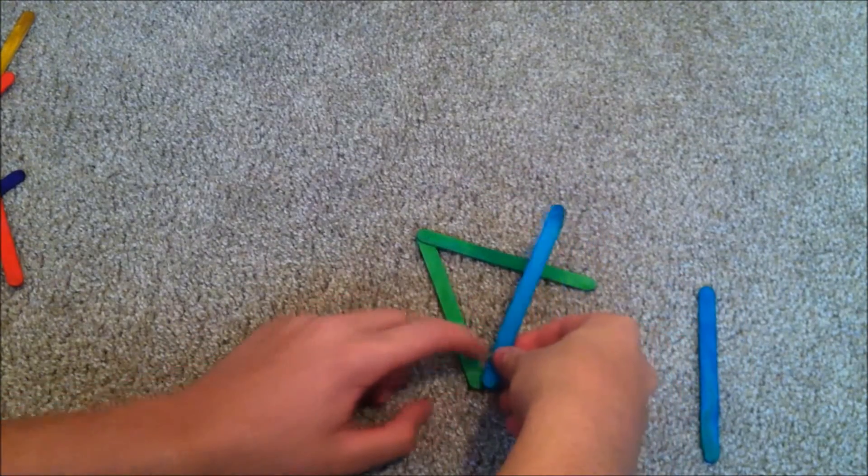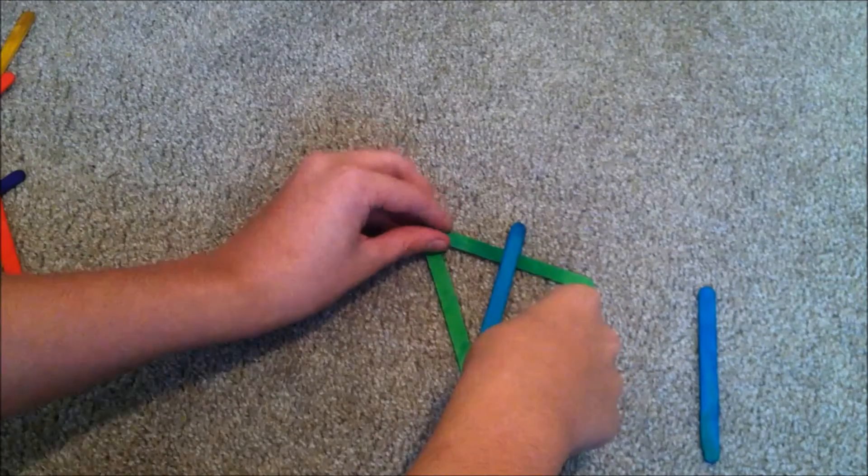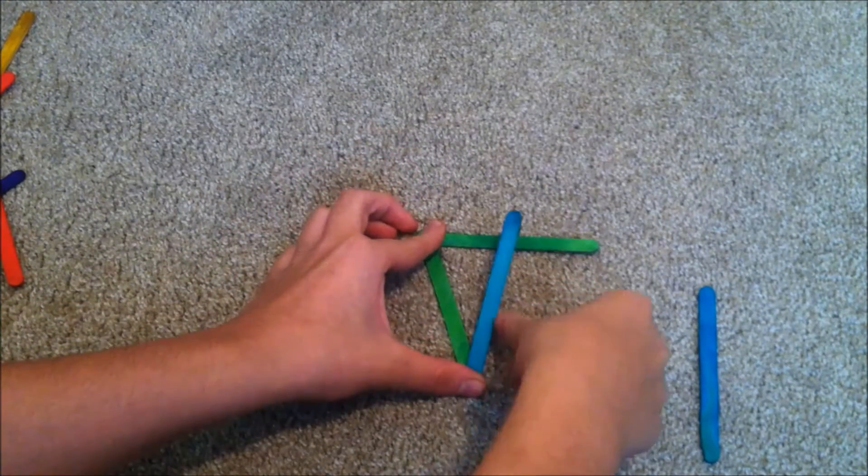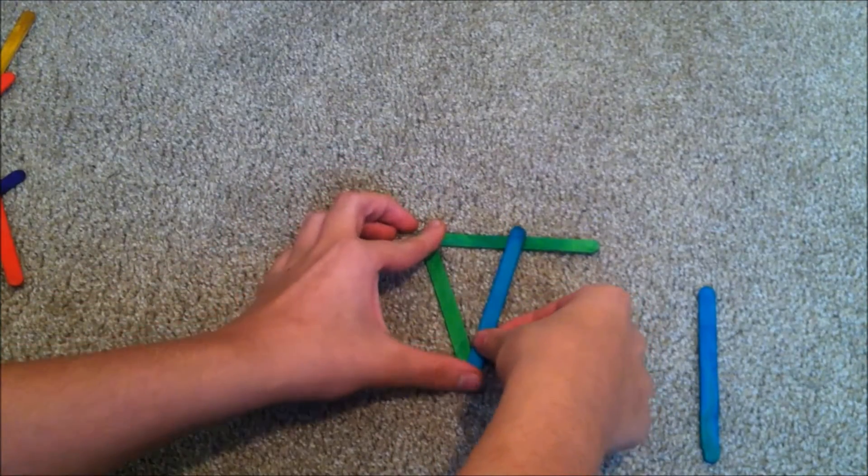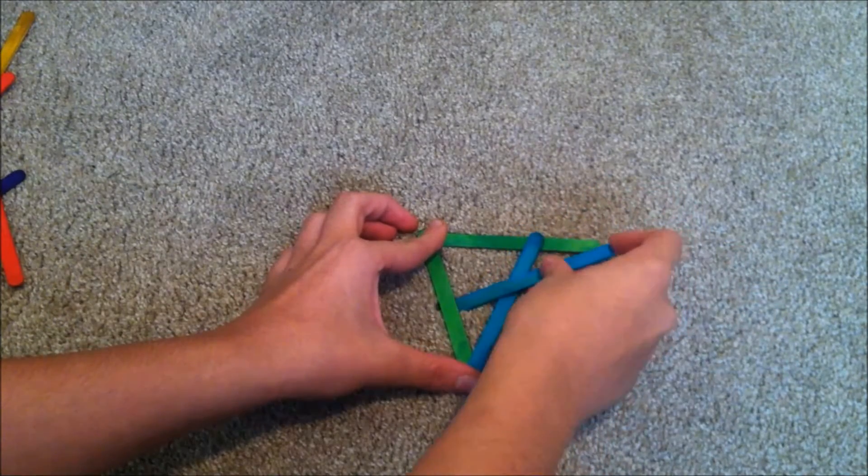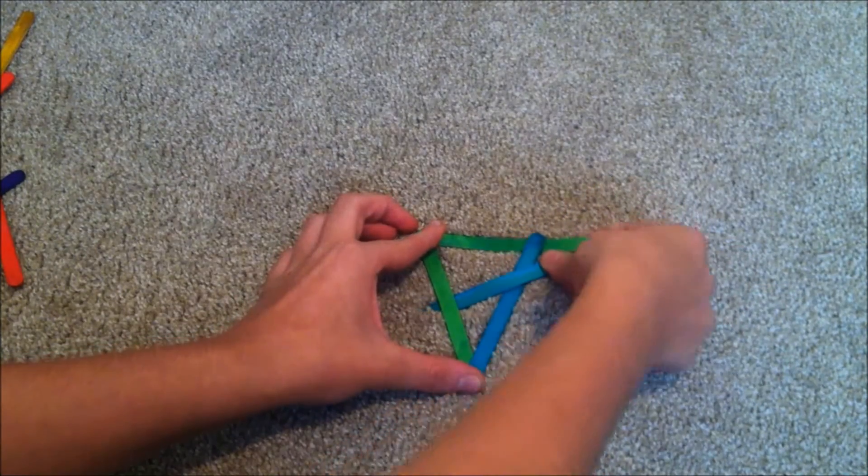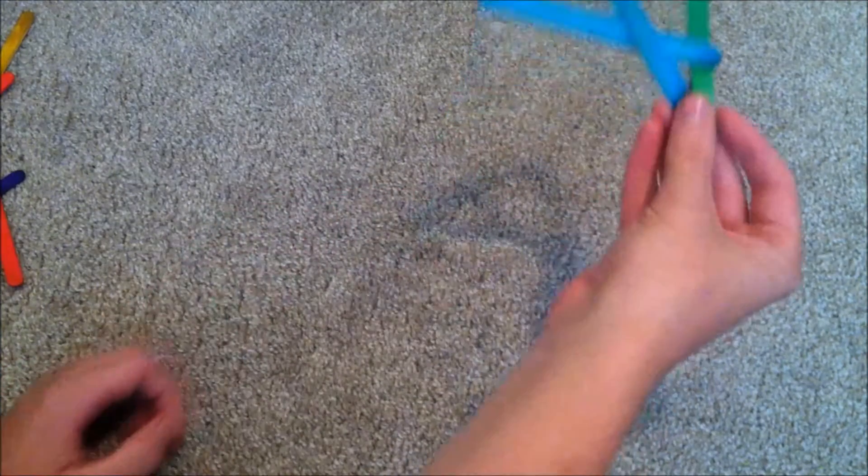Slide the fourth stick under the first, under the second, and over the third. You've just created the most basic version of the popsicle stick bomb. This one is the least exciting, but it will always go off with a snap.